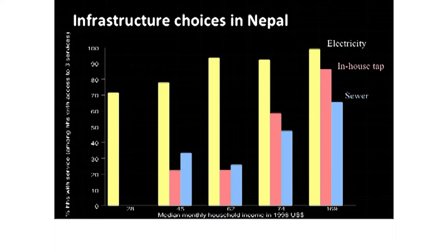At middle income levels in the Nepal data, more households have connections to the sewer system than to the water system. For many people in industrialized countries, this might seem like a puzzle — you may have never seen a situation where people have sewer connections but not piped water. But in parts of South Asia, this is not unusual. People may get their water from neighbors or other sources, carry it into their homes, and use it to flush toilets connected to sewers. So in some places, households connect to sewer lines before they connect to water lines.